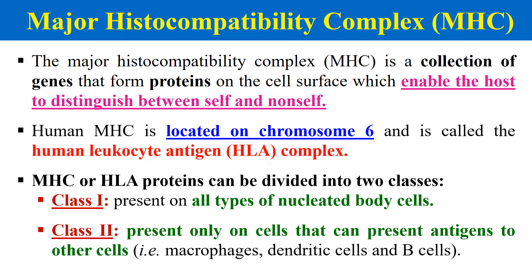Major histocompatibility complex is generally of two types: class 1 molecules and class 2 molecules. Class 1 MHC is present on all cells that contain a nucleus, meaning all nucleated cells. Class 2 MHC molecules are only present on antigen-presenting cells — cells that play a role in antigen presentation — such as B cells, macrophages, and dendritic cells.